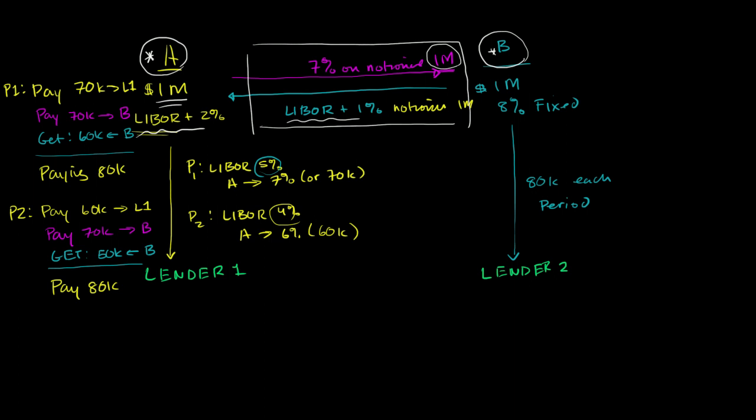Now the opposite is going to happen with B. In the old one, every period it paid $80,000. But now it's going to be a little bit different. In Period 1, it still pays $80,000, and in Period 2, it still pays $80,000.